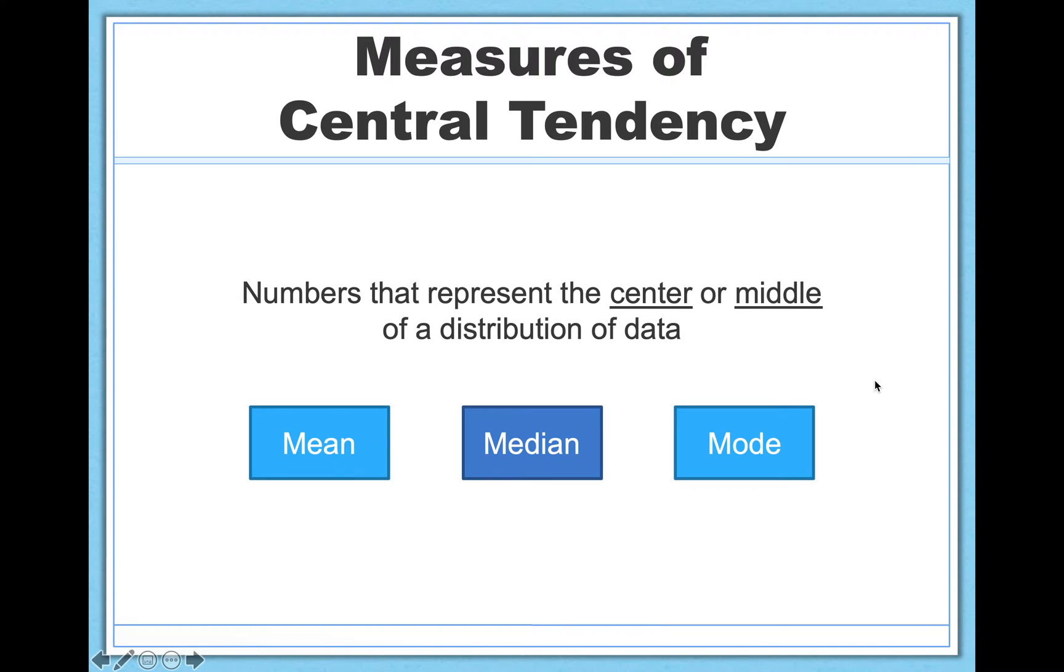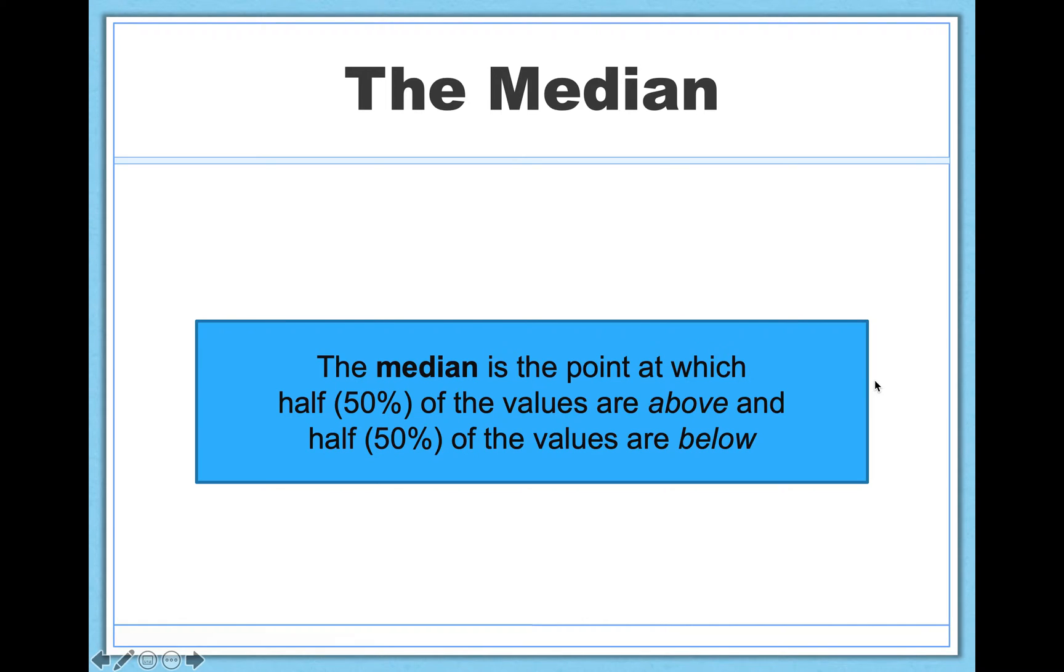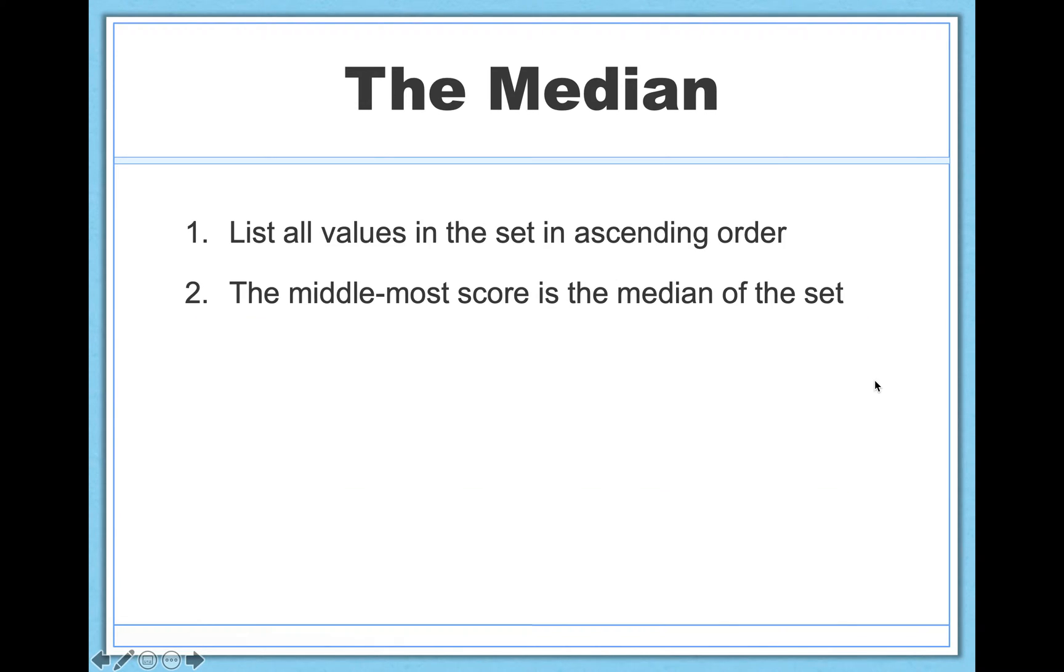Let's talk briefly about the median and mode. The median is just the point at which half the values in the data set are above it and half of the values in the data set are below it. So it's sort of the true middle. It's the center of the data set in the truest sense. Calculating the median is very simple. We'll talk about it in the next video, but it's so quick to mention. I might as well include it now. All you have to do is list the values in order. I write ascending order here, but descending works as well. And pick the middlemost score in the set, and that's your median.